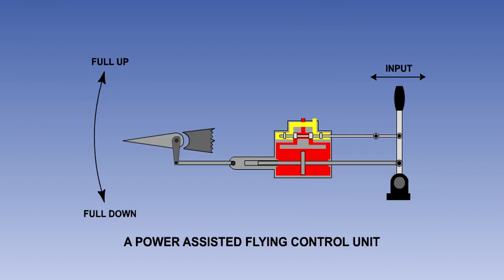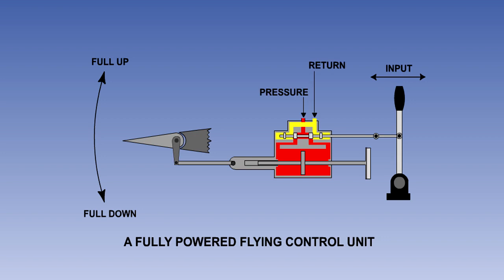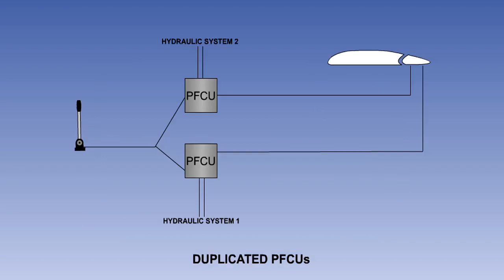That is the end of the lesson. You have learned that powered flying controls are operated hydraulically, that power assisted systems are reversible, and fully power operated systems are non-reversible. You have also seen that powered flying control units are usually duplicated, with each unit being powered by a separate hydraulic system.